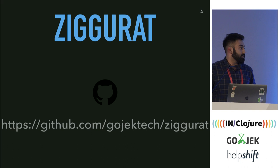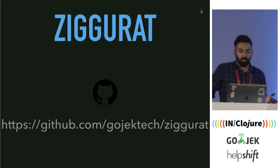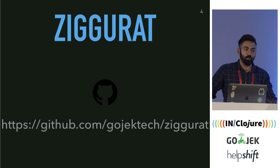So what is Ziggurat? Ziggurat is a stream processing framework. It's open source, so a lot of the code you see today you'll be able to find online on our GitHub repo.